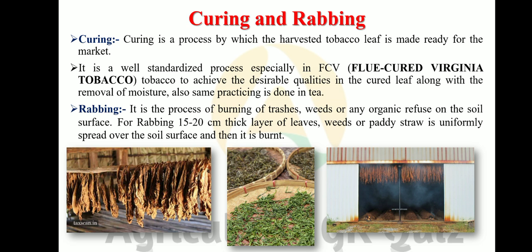Curing is a process by which the harvested tobacco leaf is made ready for the market. It is a well-standardized process especially in FCV — flue-cured Virginia tobacco — to achieve desirable qualities in the cured leaf, along with the removal of moisture. The same practice of removing moisture is also done in tea.